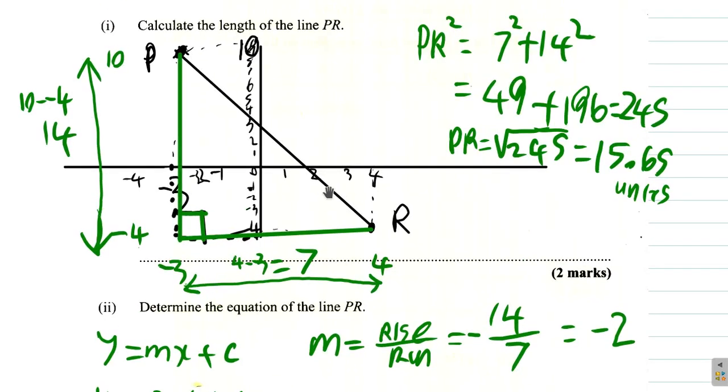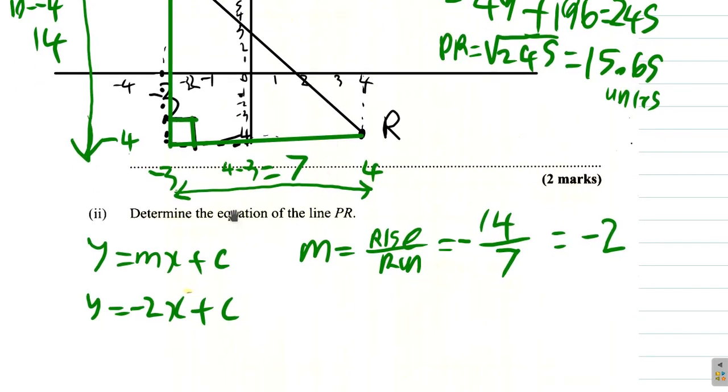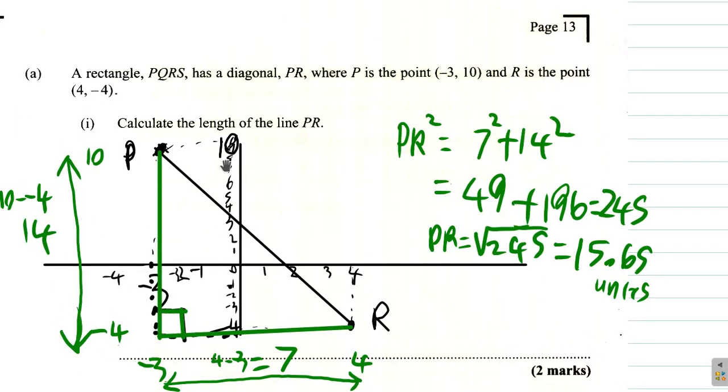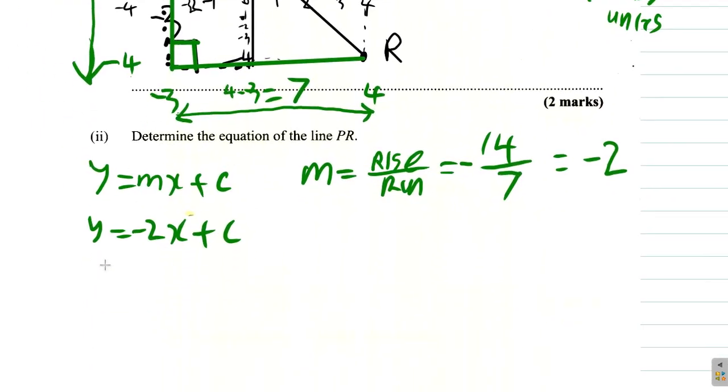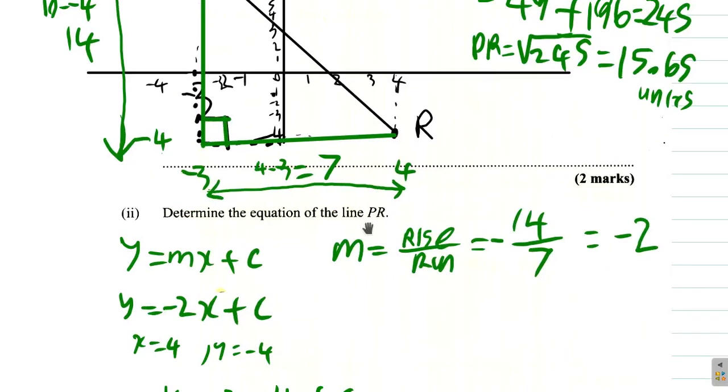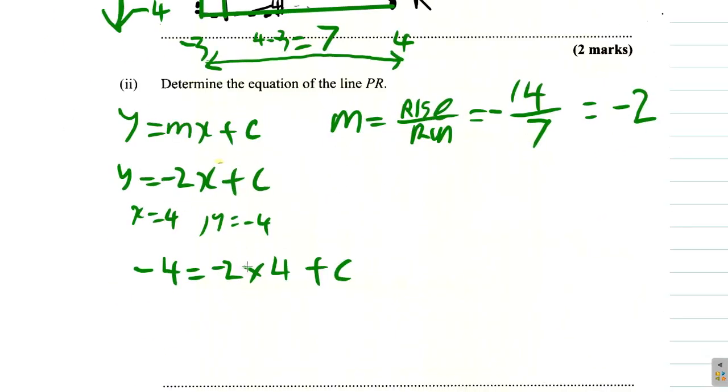So it is in the form y equal negative 2x plus c, but we need c. What we can do is use one of the points we are given to find c. At one point x equals 4 and y equals negative 4. So when y is negative 4, negative 4 equals negative 2 times 4 plus c. So negative 4 equals negative 8 plus c. So if we add 8 to both sides, negative 4 plus 8 equals c, so c would be 4.